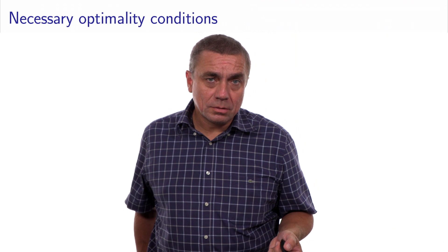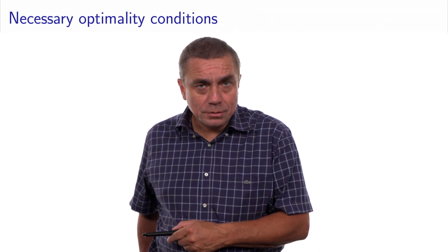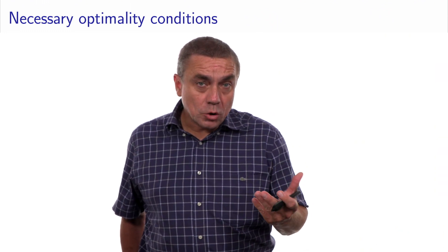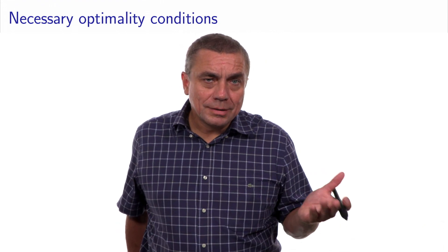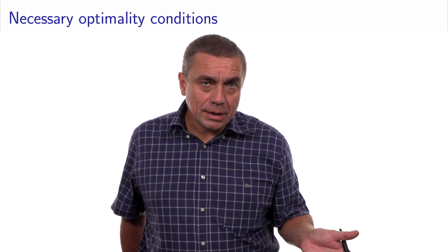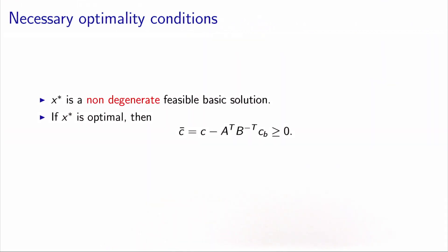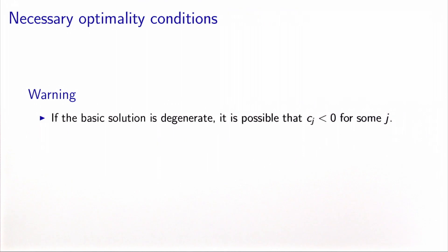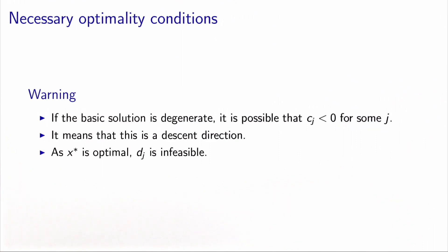We may be at an optimal solution with one reduced cost negative. To write a necessary optimality condition, we must assume the basic feasible solution is non-degenerate. In that case, the reduced cost being non-negative is necessary: if x* is optimal, then all reduced costs are non-negative. If the basic solution is degenerate, it may be possible that a reduced cost is negative even though the solution is optimal — that direction is a descent direction, but it is infeasible because we are at an optimum.